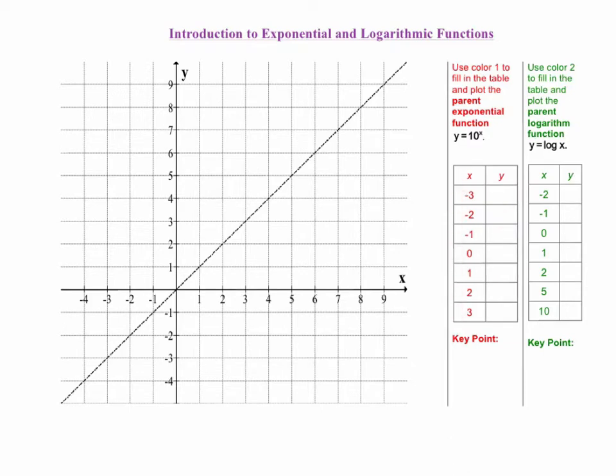Now we are going to plot these ordered pairs on our graph. Pause the video if you need to so that you can have time to plot your ordered pairs. Once you've plotted your ordered pairs, you can connect the dots to draw your curve. Your curve should look something like this.